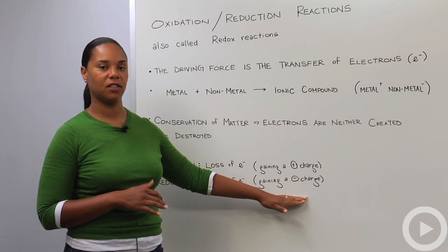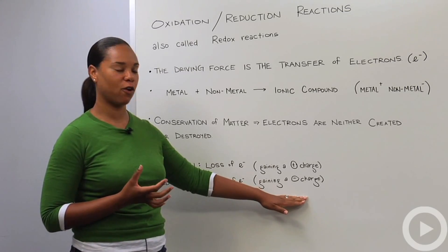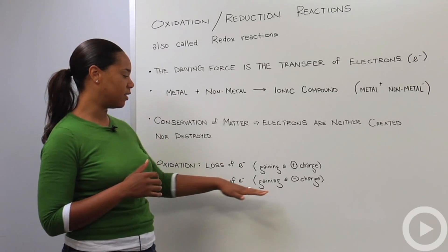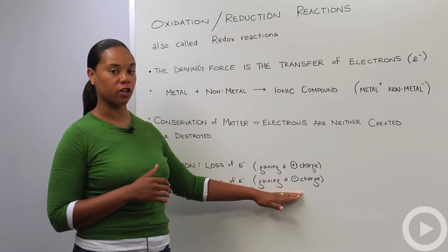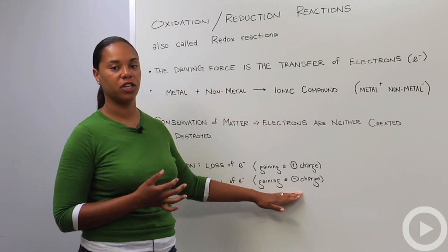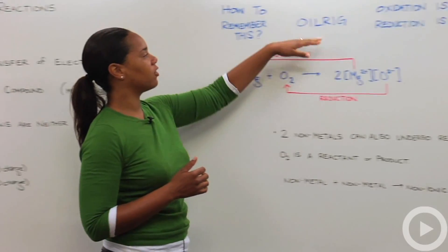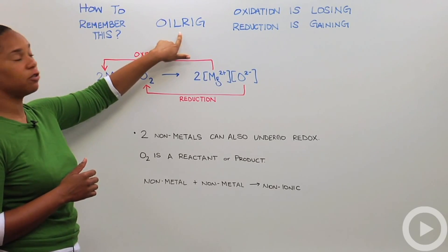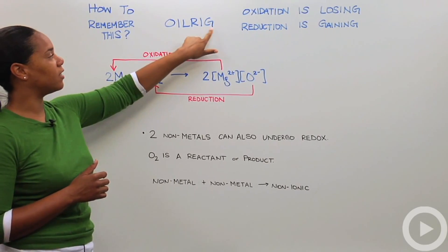So you can guarantee that this is going to be a little difficult for you in the beginning to remember that reduction is the gaining of a negative charge. So there is a simple way in which to help remember this. And that is by understanding this mnemonic, oil rig. So oxidation is losing, and reduction is gaining.